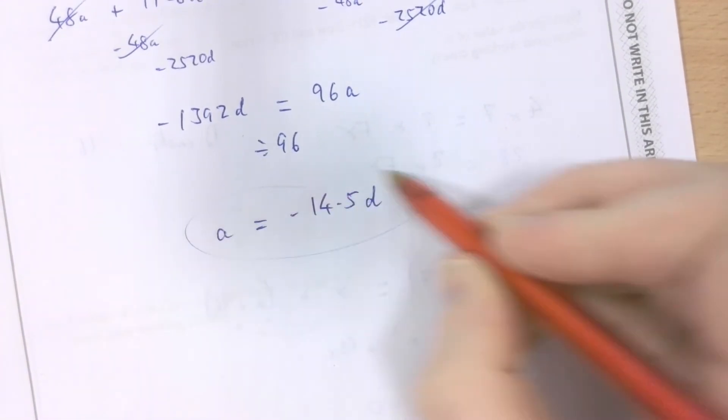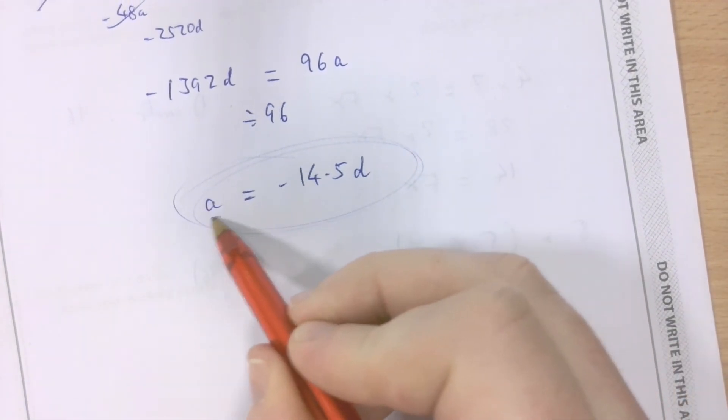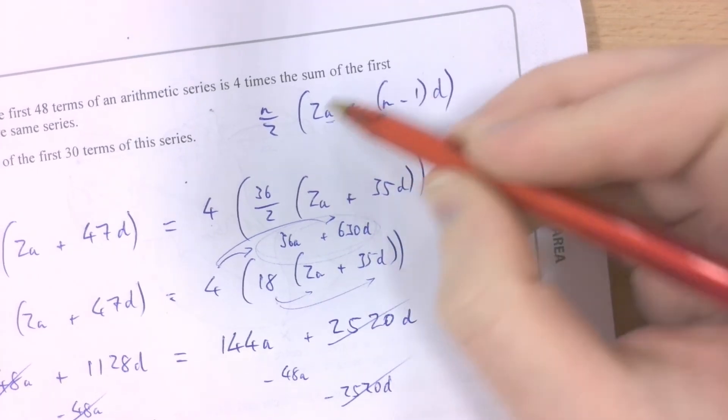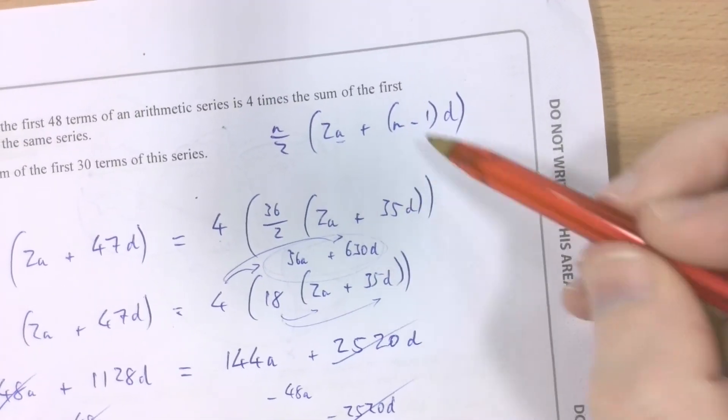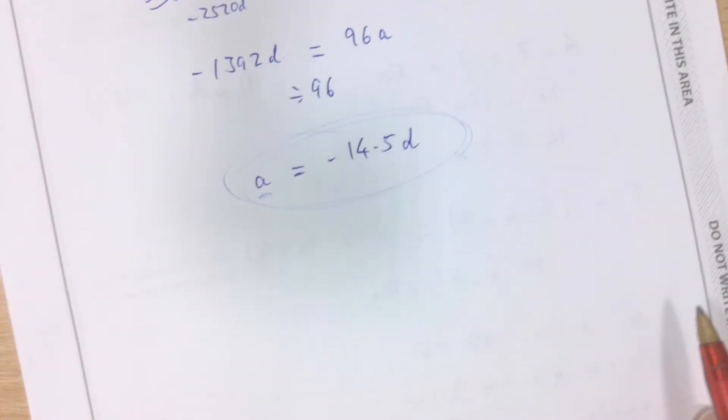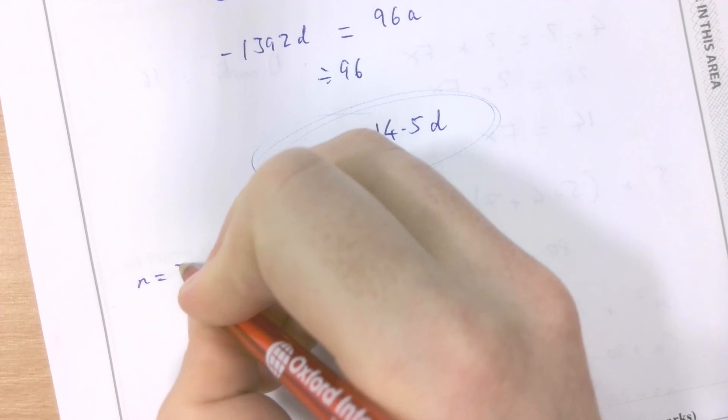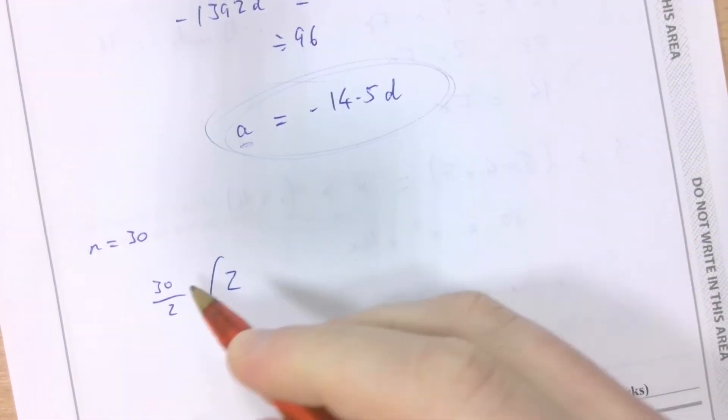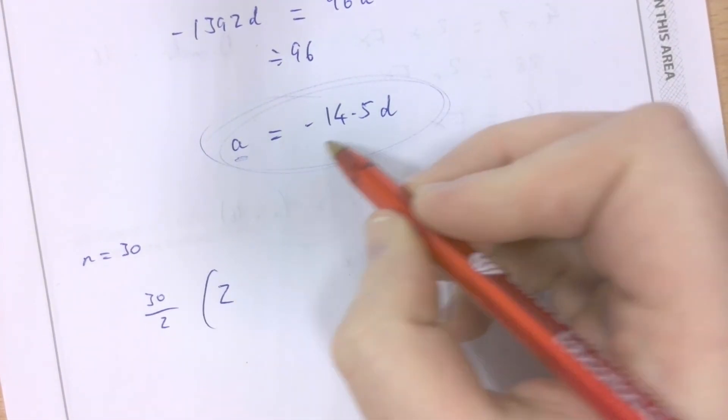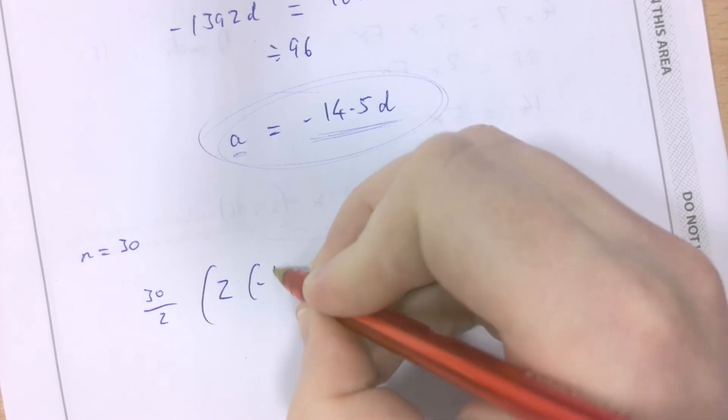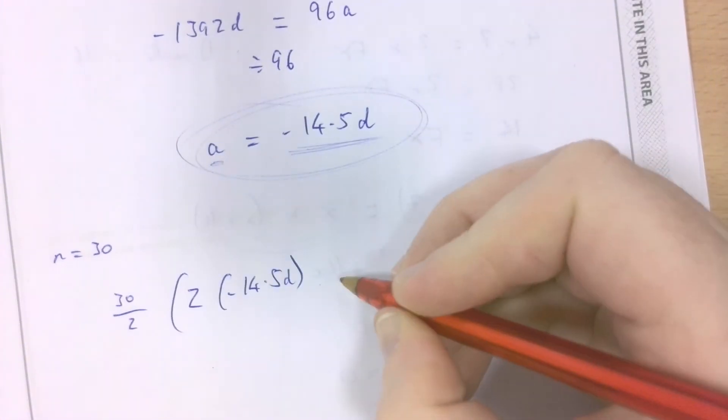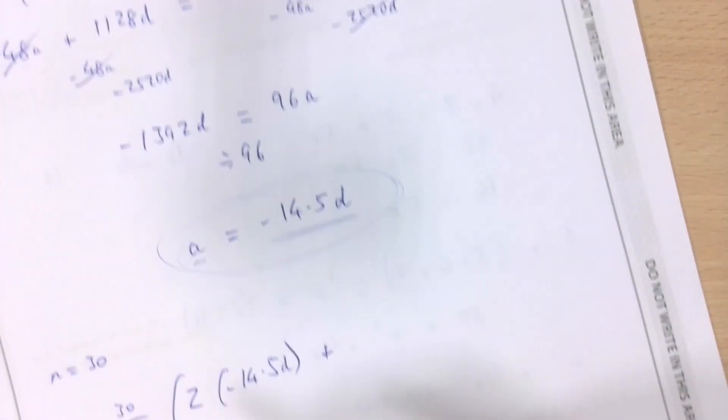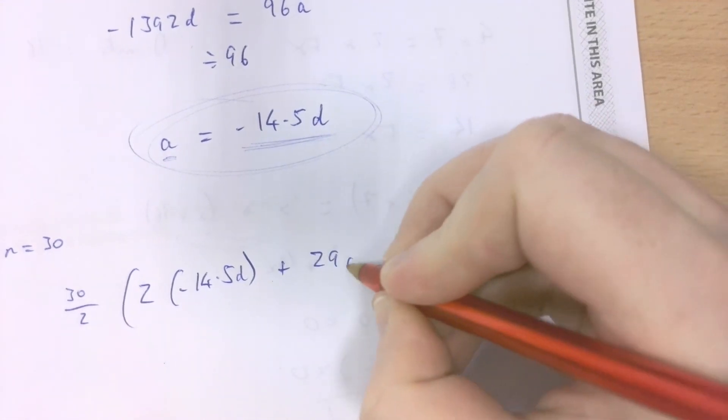Now, this is useful because effectively, I can replace a in the sum formula, this a, with what it is in terms of d. That might help me find the first 30 terms of the series. Let's give it a go. So, when n is 30, the formula becomes 30 over 2 times 2a. Again, remember, we know that a is negative 14.5d, so let's replace that with negative 14.5d. Plus n minus 1. Remember the formula? n minus 1d. 30 take away 1 is 29d.